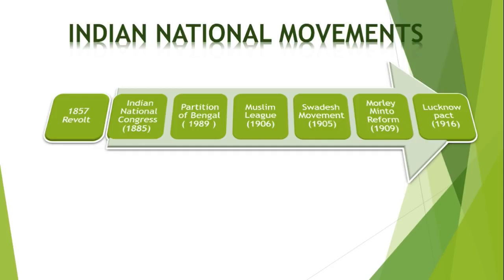The next was the Muslim League, 1906. The All India Muslim League was set up under the leadership of Aga Khan. This league basically supported the Partition of Bengal and opposed the Swadeshi Movement. They demanded special support for Muslims and separate electorates for Muslims. This league basically led to the formation of communal differences between Hindus and Muslims.